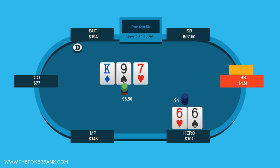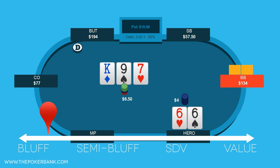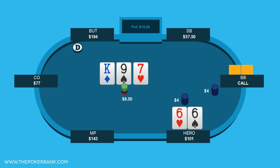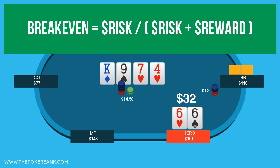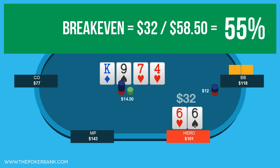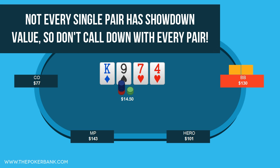It should also be noted that your own equity will influence things. So if you have a big draw, you don't require as many folds as a pure bluff, since you can improve and win sometimes. But this hand has very few outs, so we'll treat it closer to a pure bluff just to simplify things. In this exact spot, villain calls our c-bet. The turn is a 4 of hearts and he bets into us for $12. Let's say we're considering a bluff raise up to $32. By raising to $32, our risk is $32, and the reward is the pot size before we make our raise, or $26.50. So 32 divided by 32 plus 26.50 equals 55%. If we can expect him to fold more than 55% of the time, we should bluff. If not, we should likely fold, unless we really think our pair of sixes are ahead enough of the time.